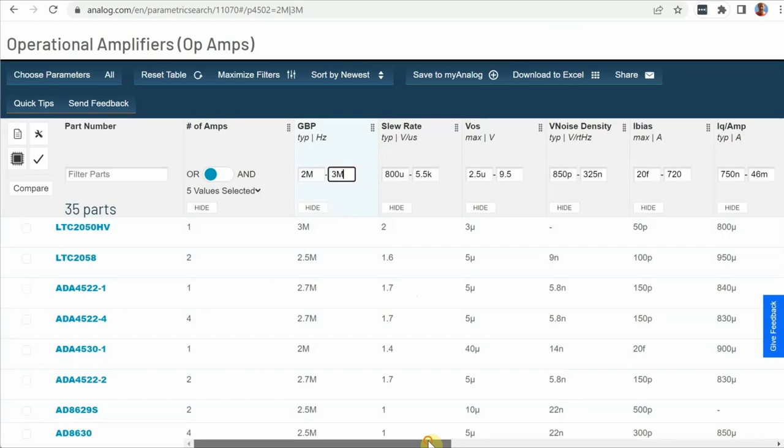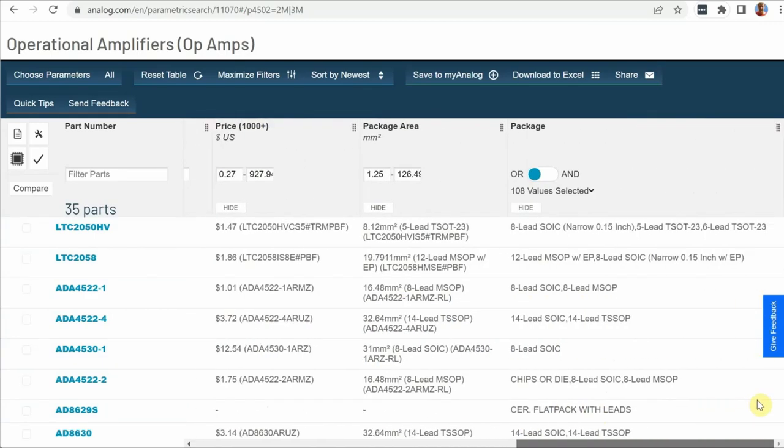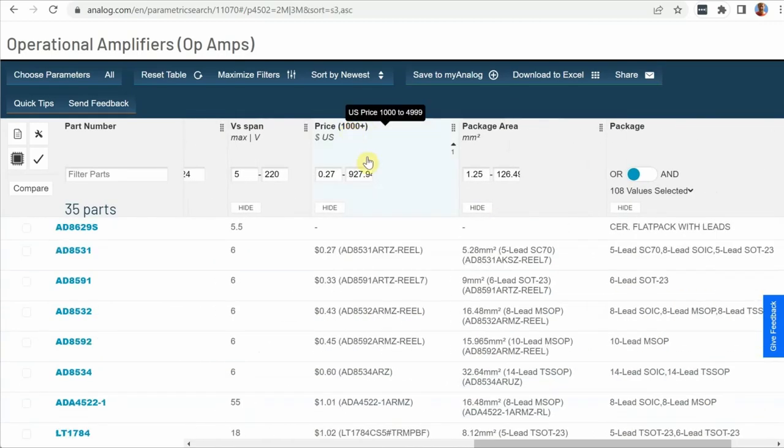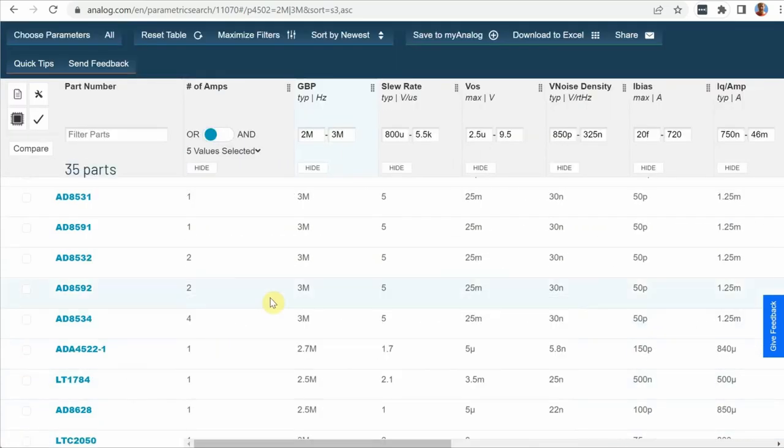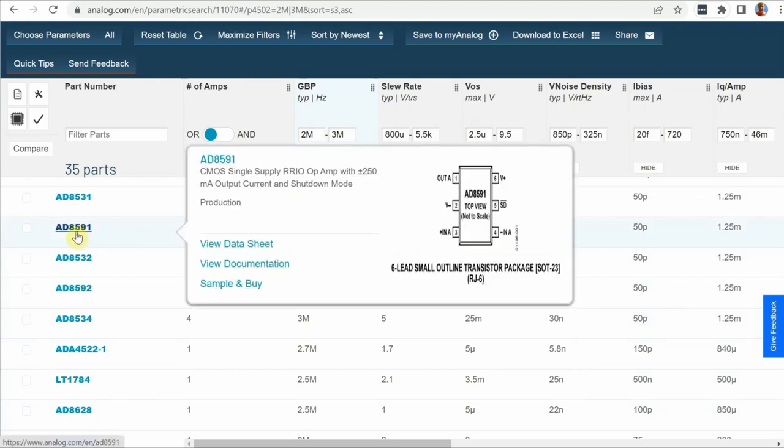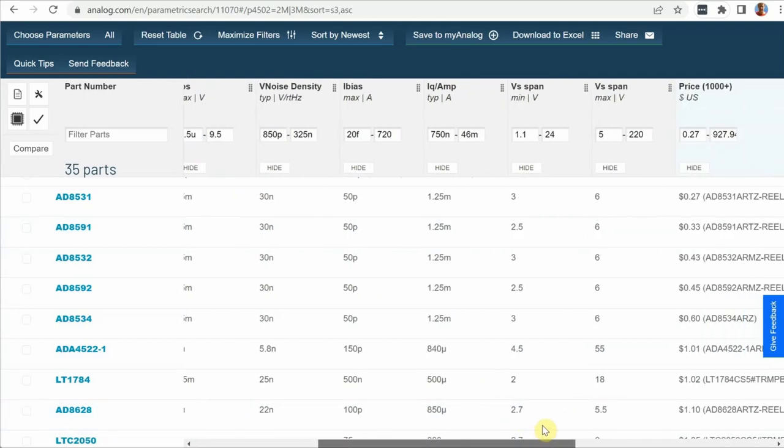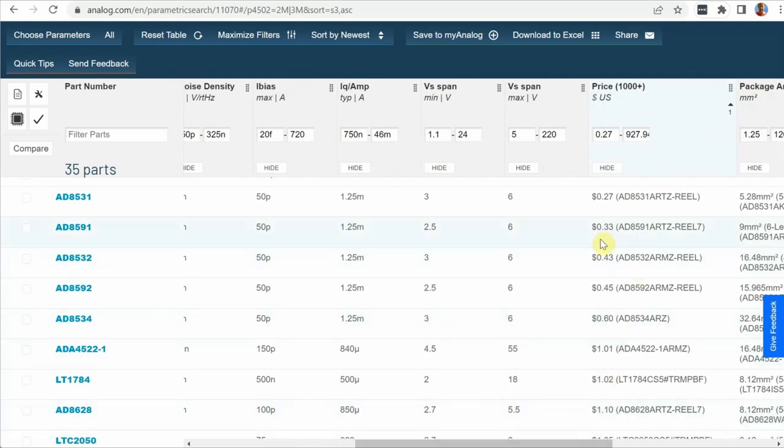And then I get a list here. Now, since I don't have any other parameters that I care about, I'm going to go over to price and sort it based on price. And I'll pick one of the first ones in this list here. This one's got a gain bandwidth product of 3 megahertz. I don't really care about any of the other parameters. So I'm going to choose this 80, 85, 91. There's a cost of 33 cents when you buy them in units of a thousand or more.